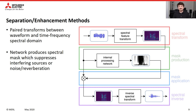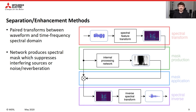In our experiments, our models fall under the same basic paradigm. There are paired transforms between the waveform and time-frequency spectral domain, as well as an internal network which produces a spectral mask that suppresses interfering sources, noise, or reverberation. The framework takes the waveform, applies a spectral feature transform to produce a spectral representation, feeds it into a network which produces a mask, multiplies that mask onto the original spectral representation, and inverts it to produce a waveform of the estimated source.